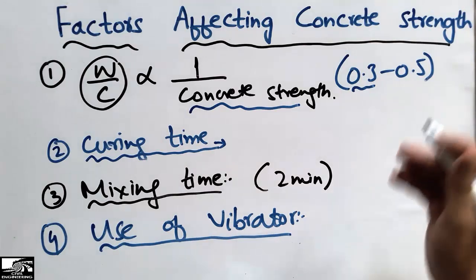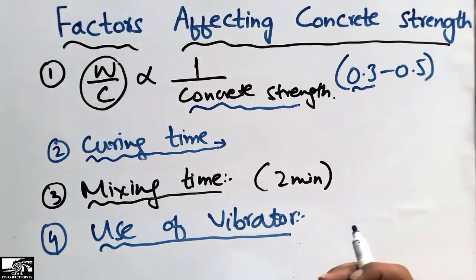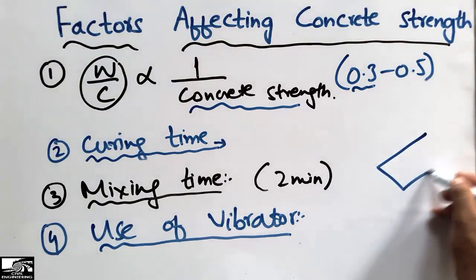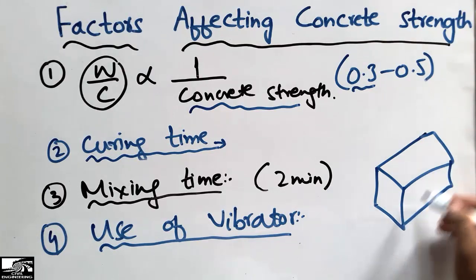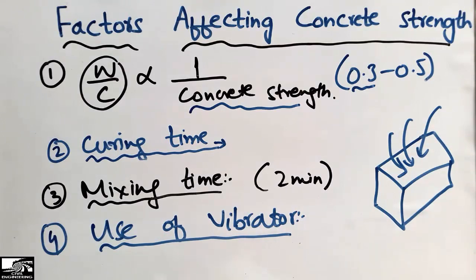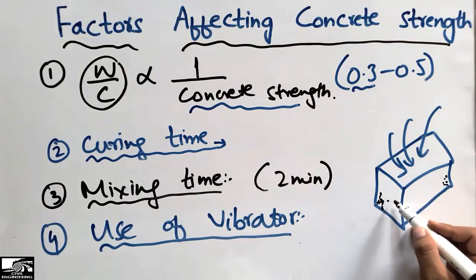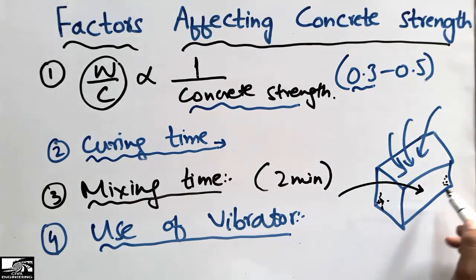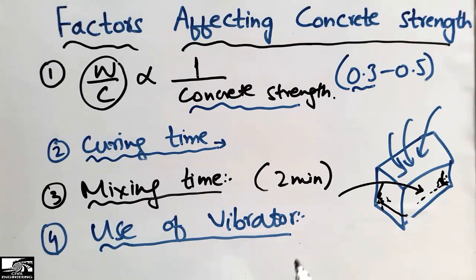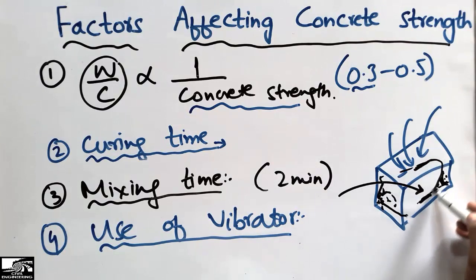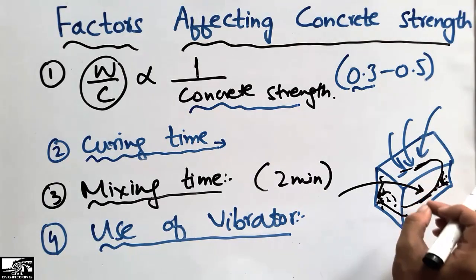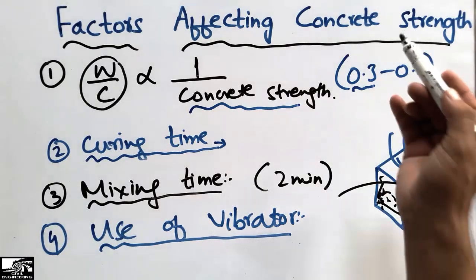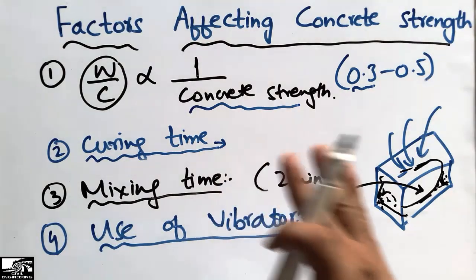The fourth factor which affects concrete strength is the use of a vibrator. We should use a good vibrator inside the concrete so that the concrete reaches every void present inside the concrete. For example, if we have a beam and pour concrete inside it, the concrete usually does not reach into each corner of the beam. So we use a vibrator so that the concrete reaches each corner and the proportionality of the concrete is not disturbed — the aggregate and cement particles should remain in the same proportion throughout the beam. Good vibration increases the strength of the concrete.